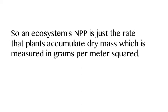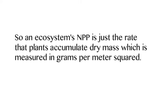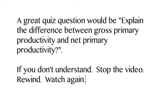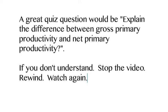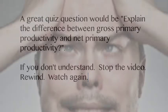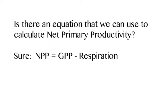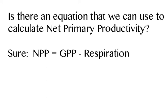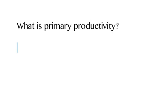A system's net primary productivity is just the rate that plants accumulate dry mass, and you measure it in grams per meter squared. That might be a question I ask you — the difference between gross primary productivity and net primary productivity. Know this: net primary productivity equals gross primary productivity minus respiration. Then watch the video again — it'll help.